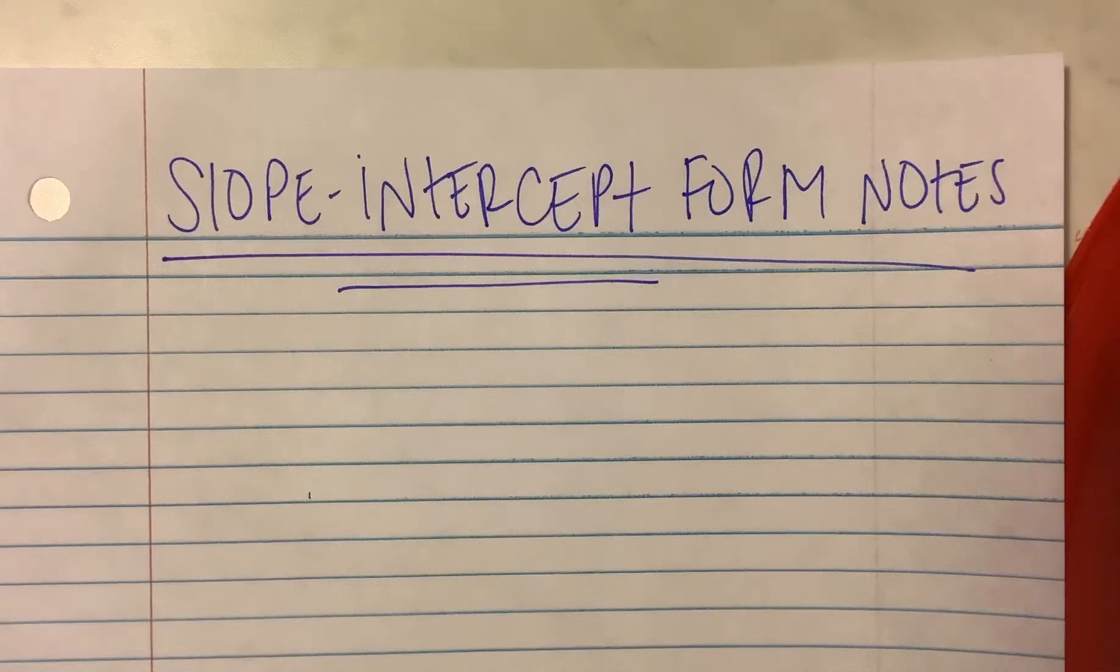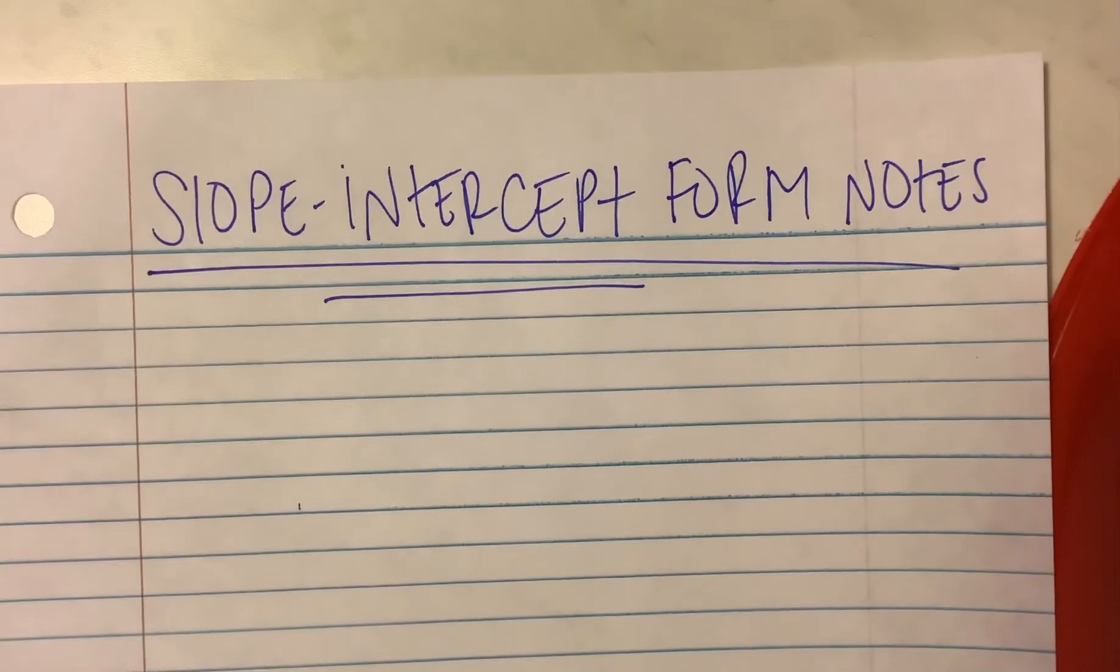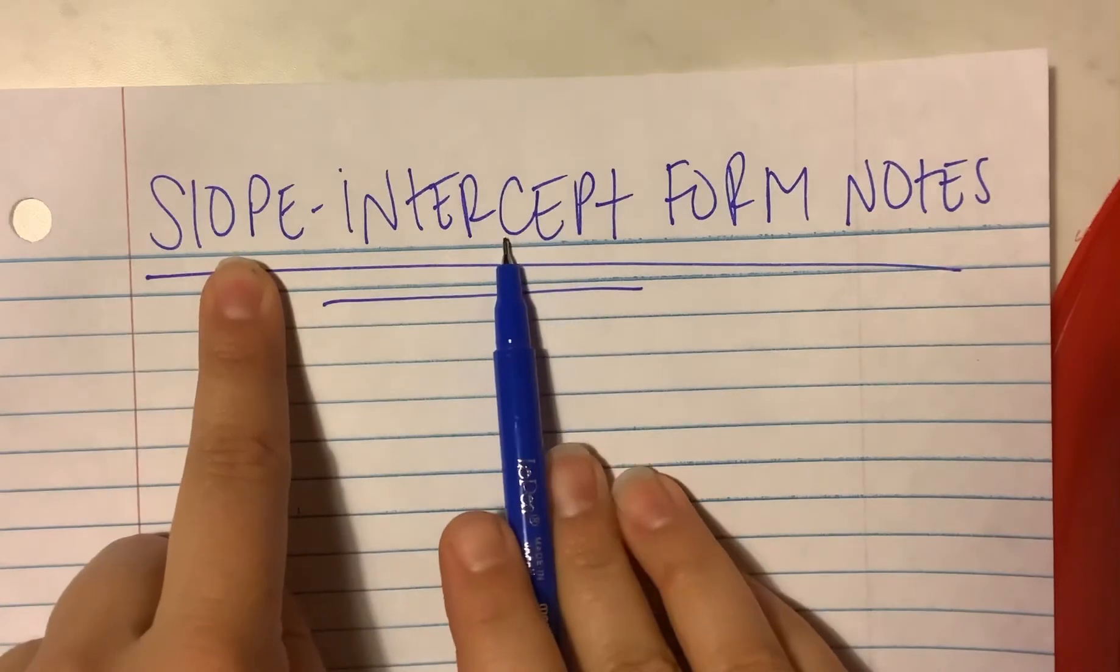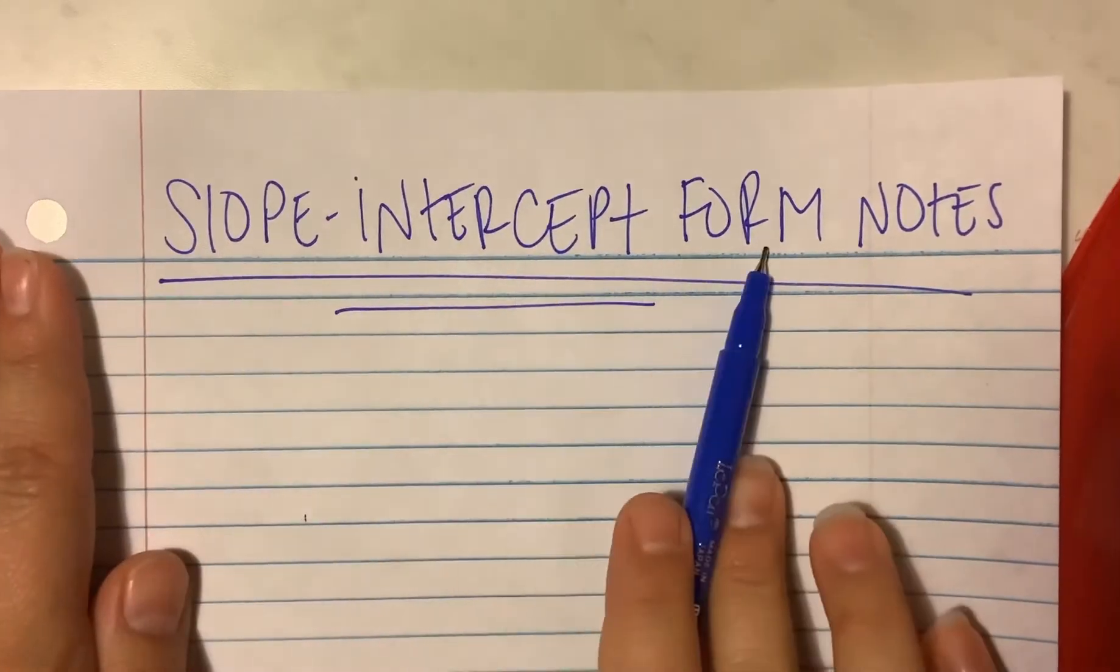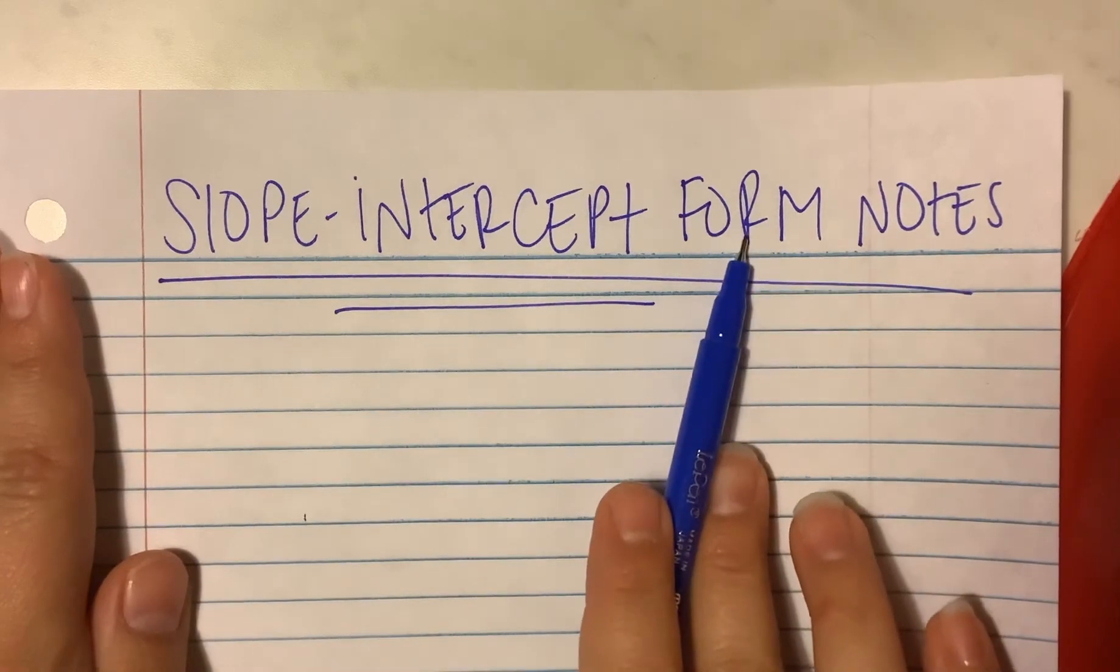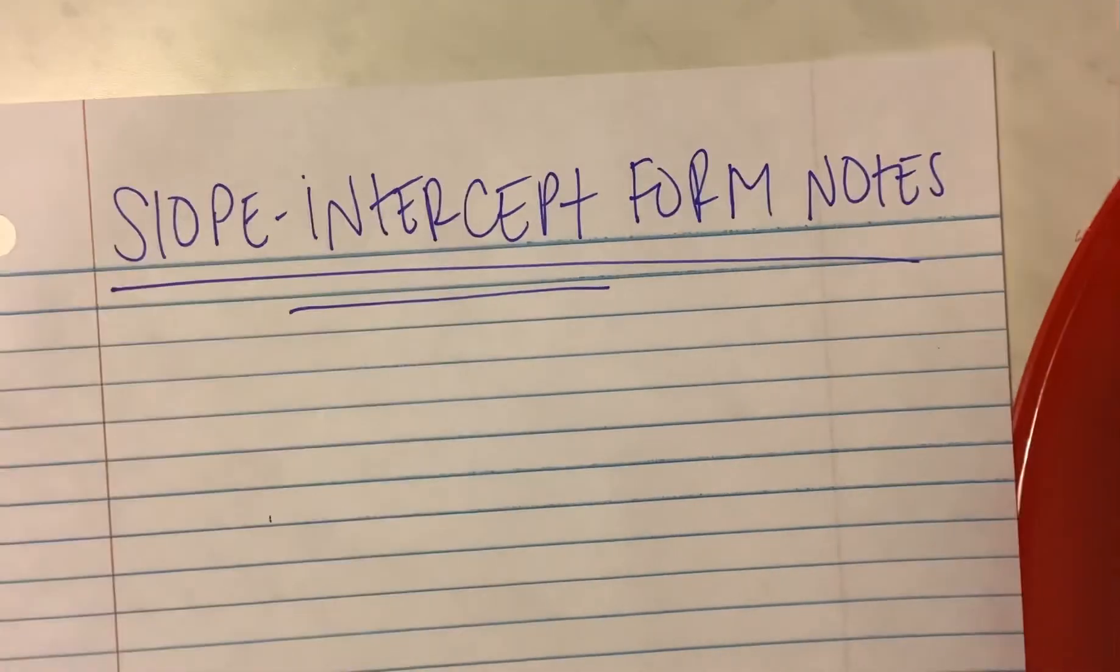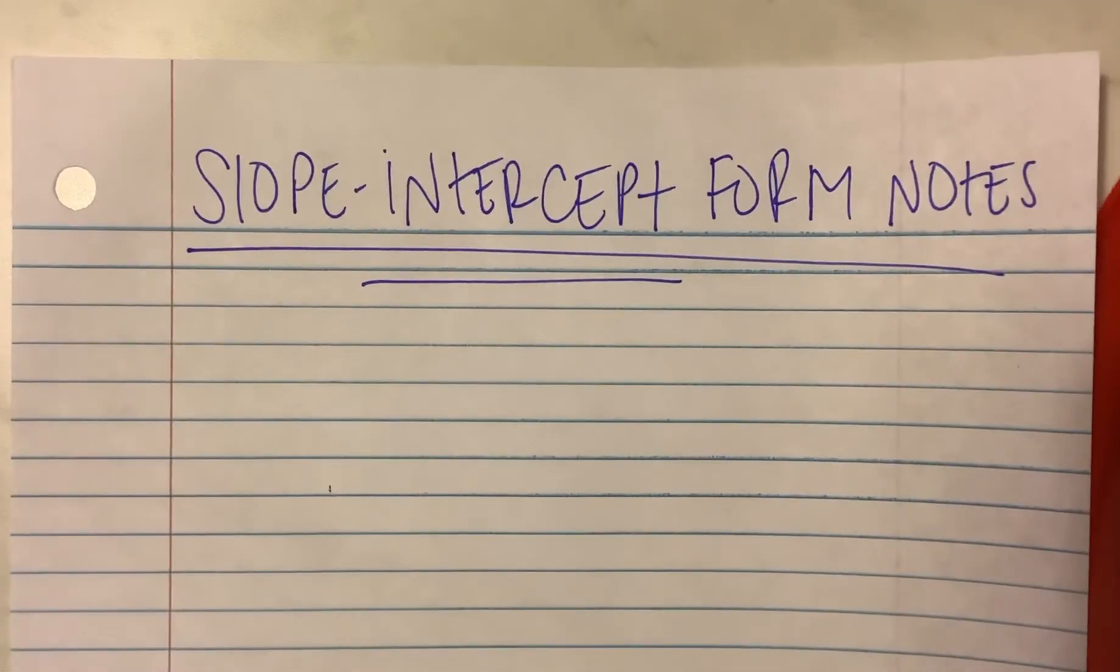Alright guys, on the next open page in your journal, I need you to write this at the top of your page. It is slope-intercept form notes. So these words sound familiar. This is something new that we're learning, the beginning of our new pathway.